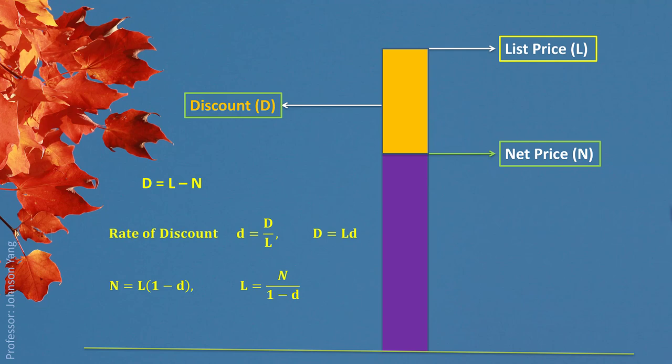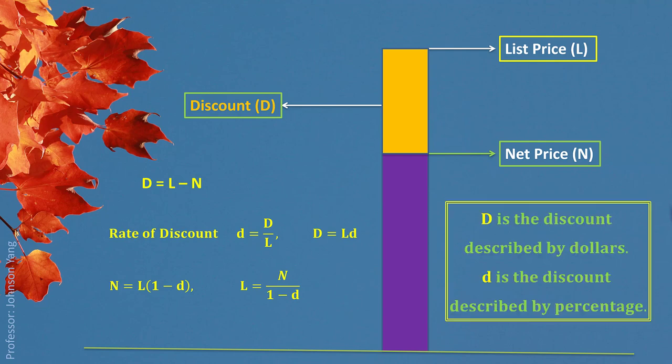Or we use net price divided by the net price factor to get list price. Make sure we understand: capital D is the discount described in dollars, and lowercase d is the discount described by percentage.